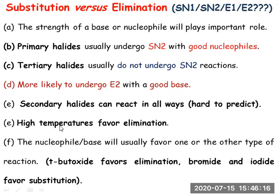Temperature also plays a key role: if the reaction is carried out at higher temperature, elimination is favored; at lower temperature, substitution is favored. If a nucleophile is present, the reaction will be SN2; if a base is present, the reaction will be elimination.